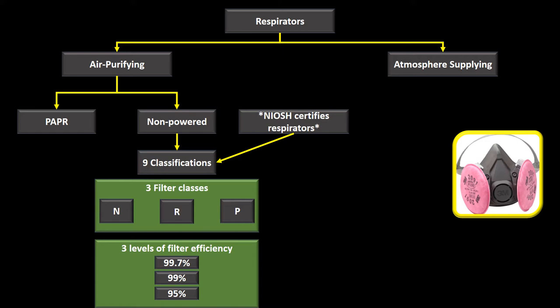For example, an N-class mask at 99.7% efficiency would be an N-100, at 99% it would be an N-99, and at 95% it would be an N-95. The N-95 is the mask used whenever a patient is on airborne precautions or suspected of a highly communicable disease like tuberculosis.